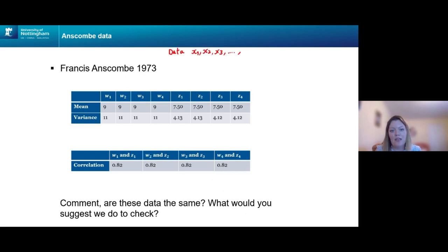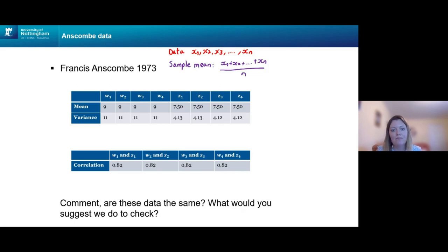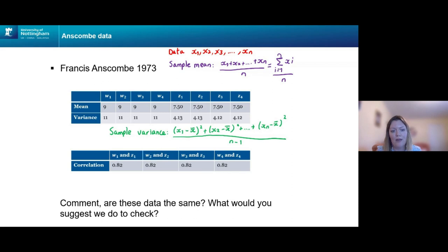As a reminder, if we have some data — n numbers, x1 to xn — the sample mean means we add the numbers up and divide by how many there are. The sample variance: for each number, subtract the sample mean and square it, add that up for each number in the data set, and divide by n minus 1. In our case, n is 11, so it would be divided by 10.